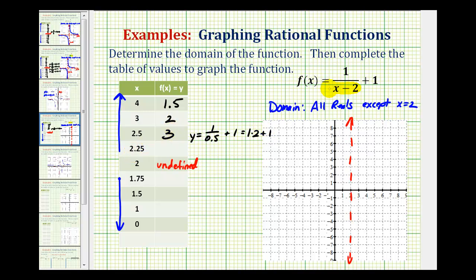When x is 2.25, notice the denominator here would just be 0.25. So we'd have y equals one divided by 0.25 plus one. Well, 0.25 is equal to one-fourth. This is one divided by one-fourth, or one times the reciprocal of four plus one. One times four is four, plus one is five.